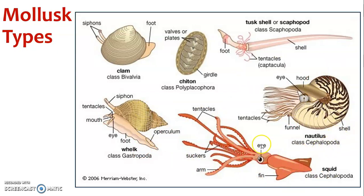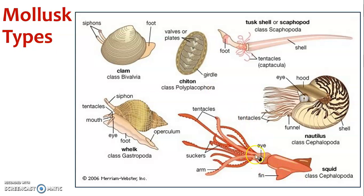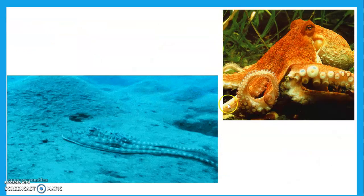Most mollusks have a shell — a little protective thing they make — or they have lost it. Things like squid have vestigial shells. Same thing with octopi. You can think of slugs compared to snails — they've lost the shell over time because nature selected for that.